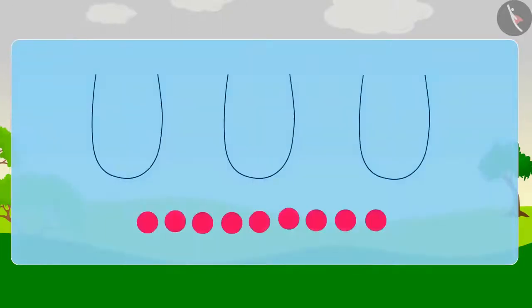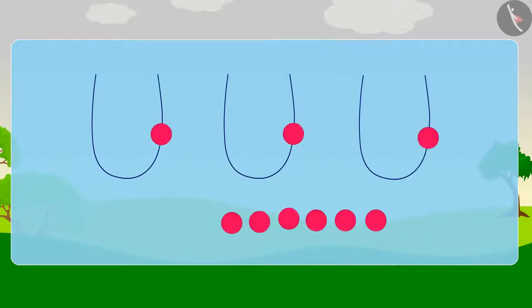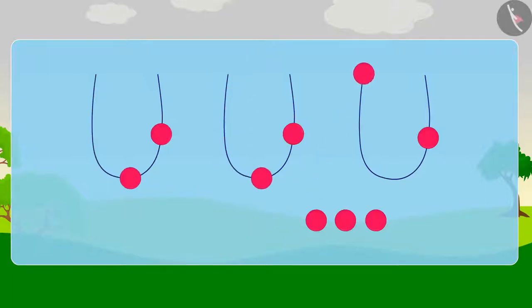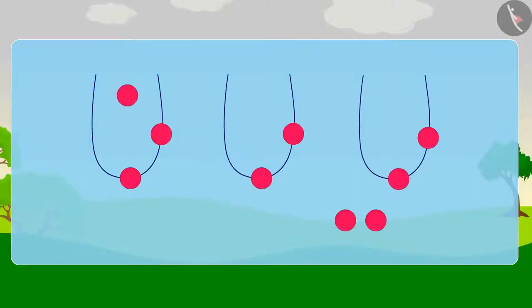Can you help Appu make 3 necklaces with equal pearls again? Let's do it together. First, we will put 1 pearl in each necklace. Now we have 6 pearls left. We will put 1 more pearl in each necklace. Now we have 3 pearls left. Now finally, we will put 1 last pearl in each necklace.